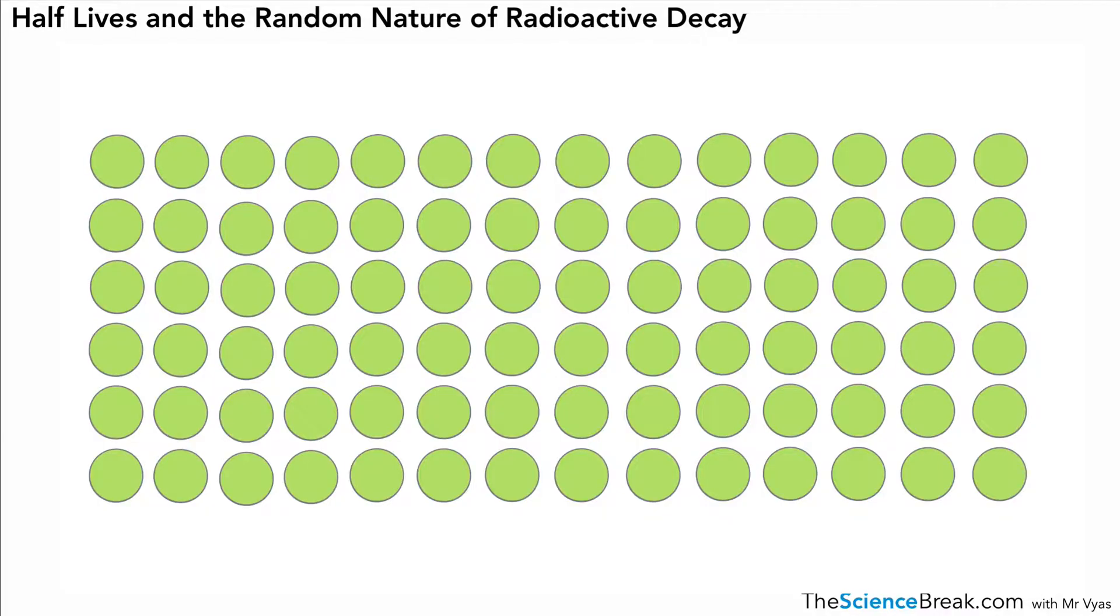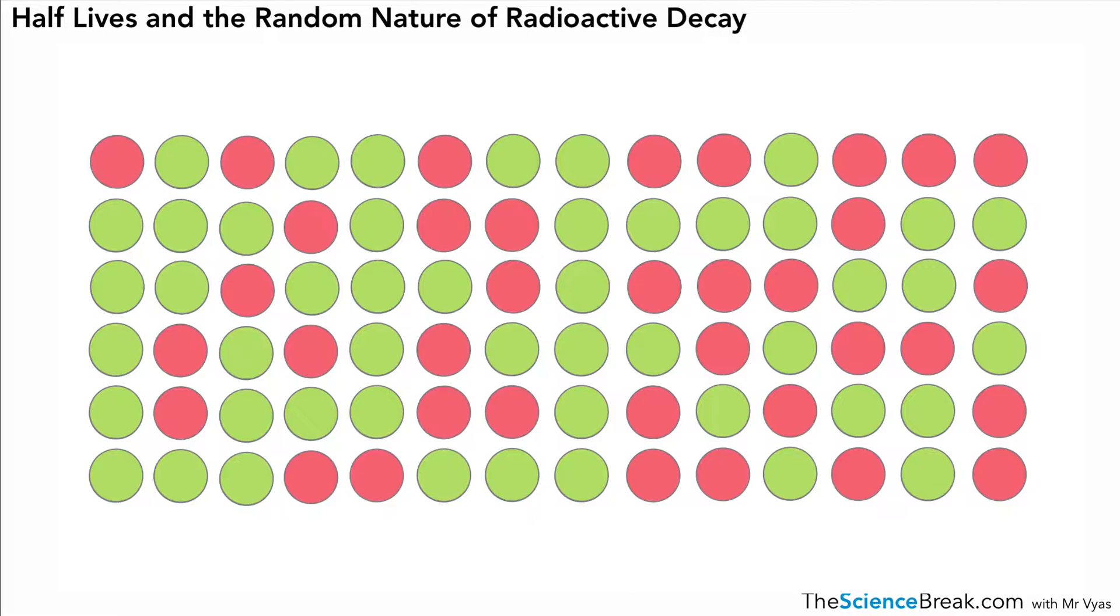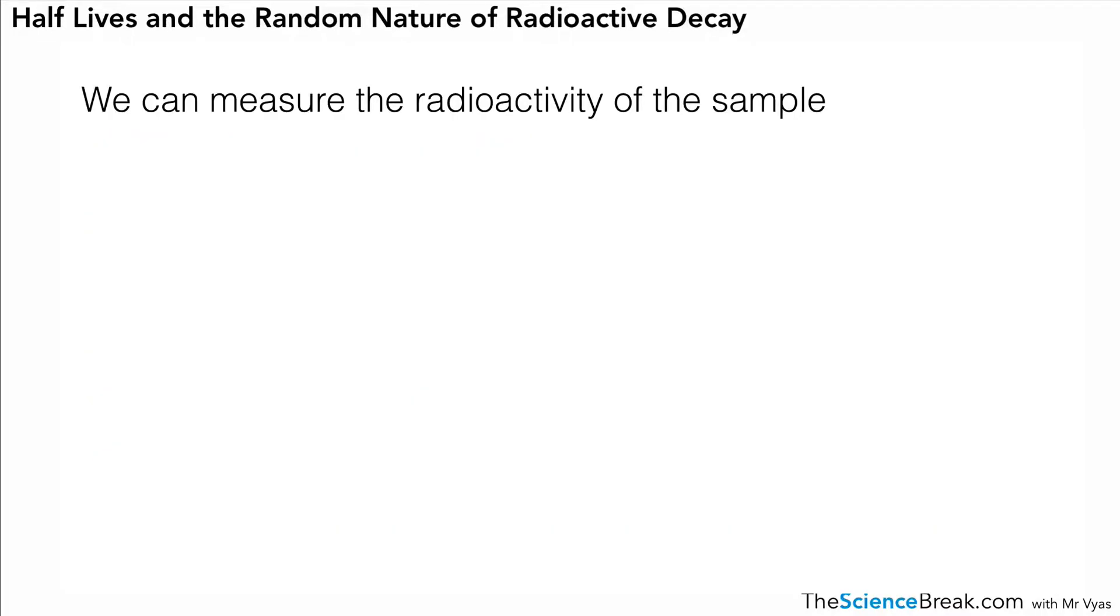We might have a different rate of decay—the second example here, the decay is happening more rapidly—but it's still very difficult to predict which one is going to go next. There's nothing we can do to increase or slow that rate down, like heating or cooling it. It is random and it's not possible to tell which one is going to decay first.